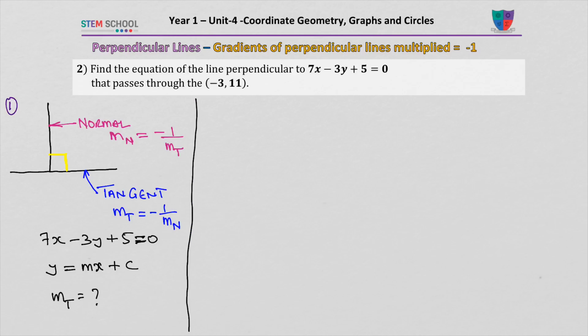So we're going to rearrange this equation and make y the subject. Taking the 3y to the other side, we get 3y equals 7x plus 5. Both sides divided by 3, so we get y equals 7 over 3 times x plus 5 over 3.